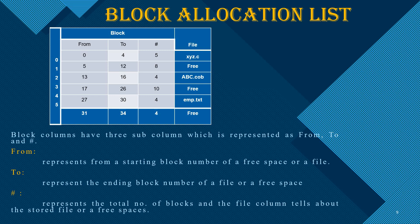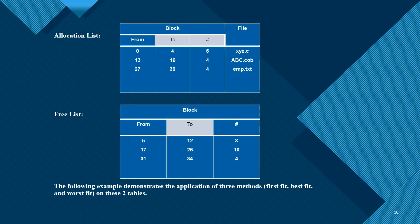We consider three columns: starting address, ending address, and size of the block. The allocation list table maintains the files which are allocated in the disk space. The free list shows how the memory spaces are free or available to store data. The allocation list shows what type of file is allocated, and the free list provides information about memory spaces available for other processes to load.